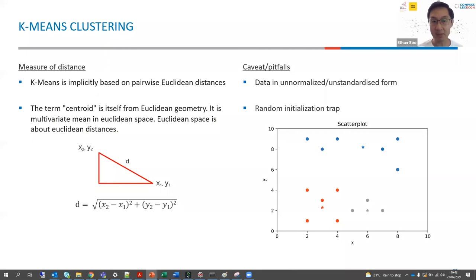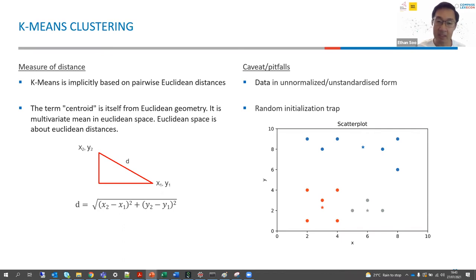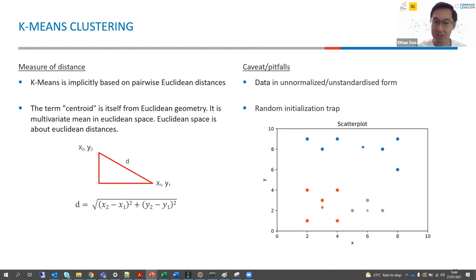Another issue is the random initialization trap. When we need to group data into clusters, we set centroids at random places. If we place the centroids differently, it could result in a clustering that is slightly different from what we had before. To negate this random initialization trap, when we code this in Python, R, or whatever software you use, we need to tell the algorithm to take this into account so that it won't happen.